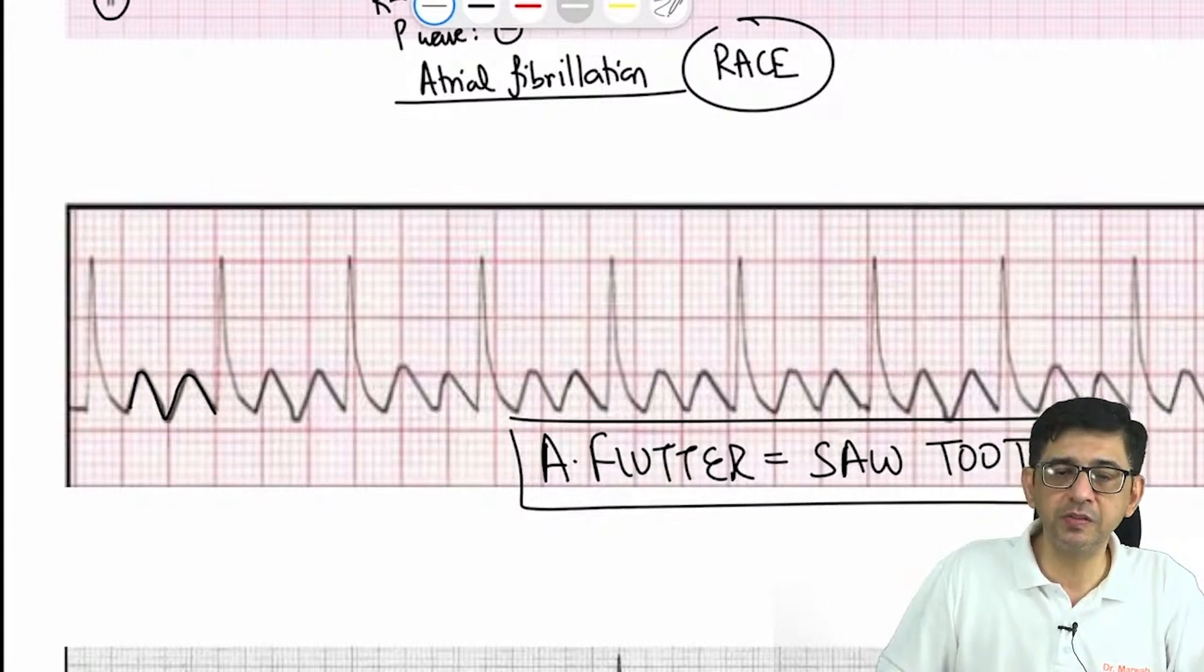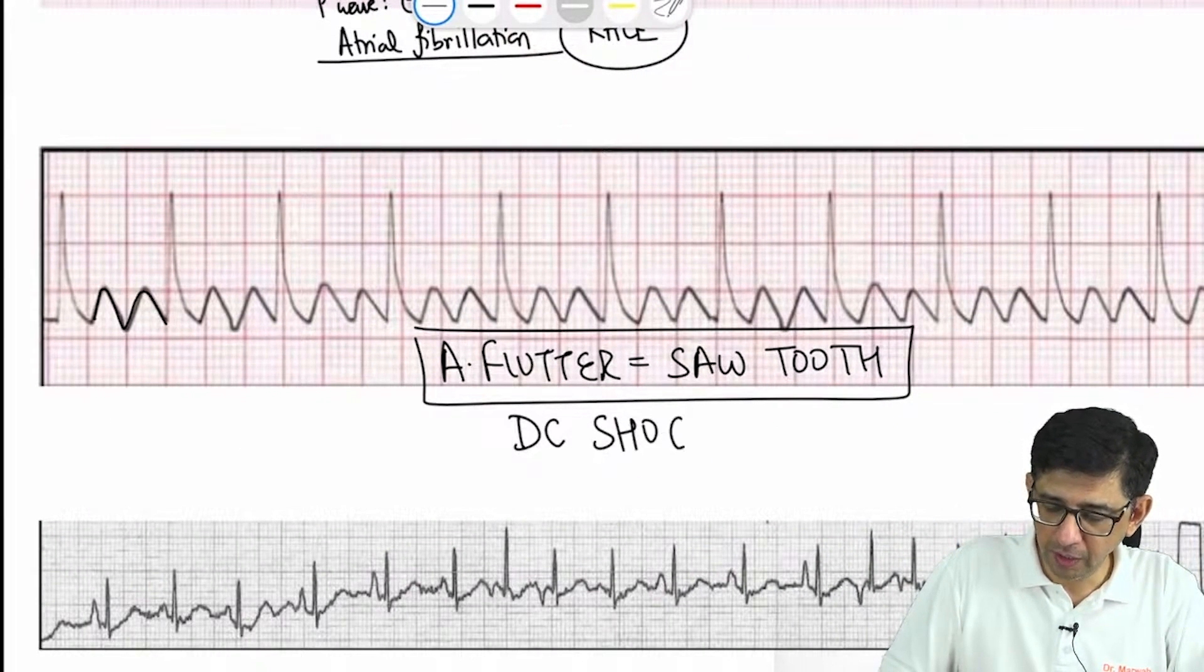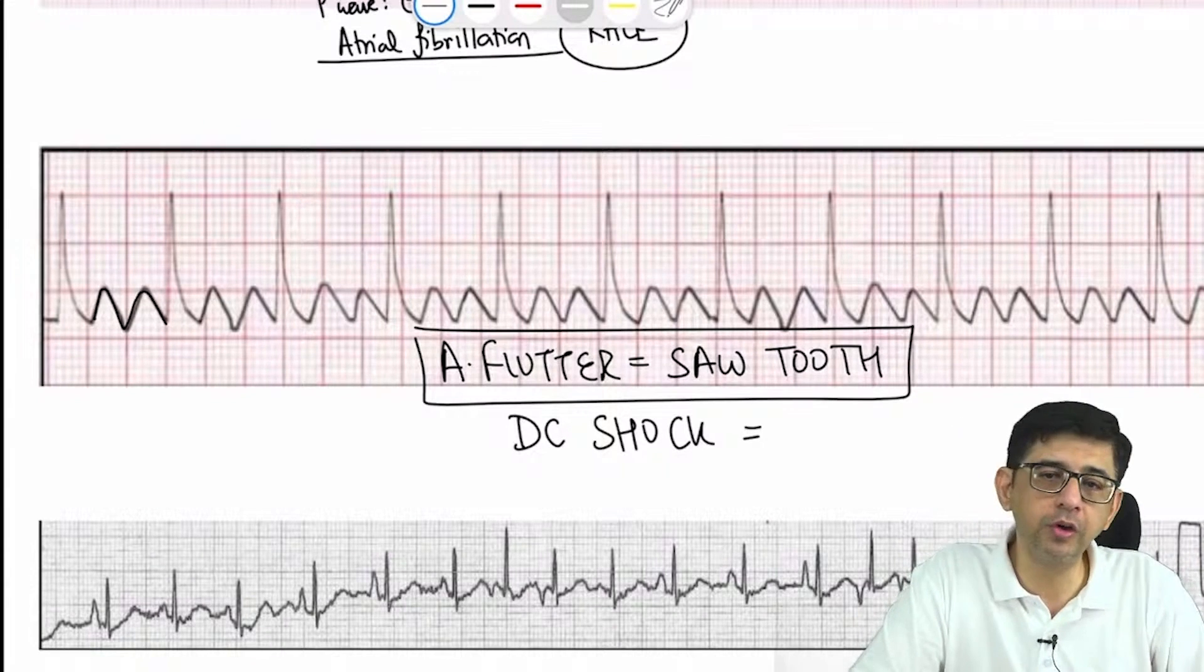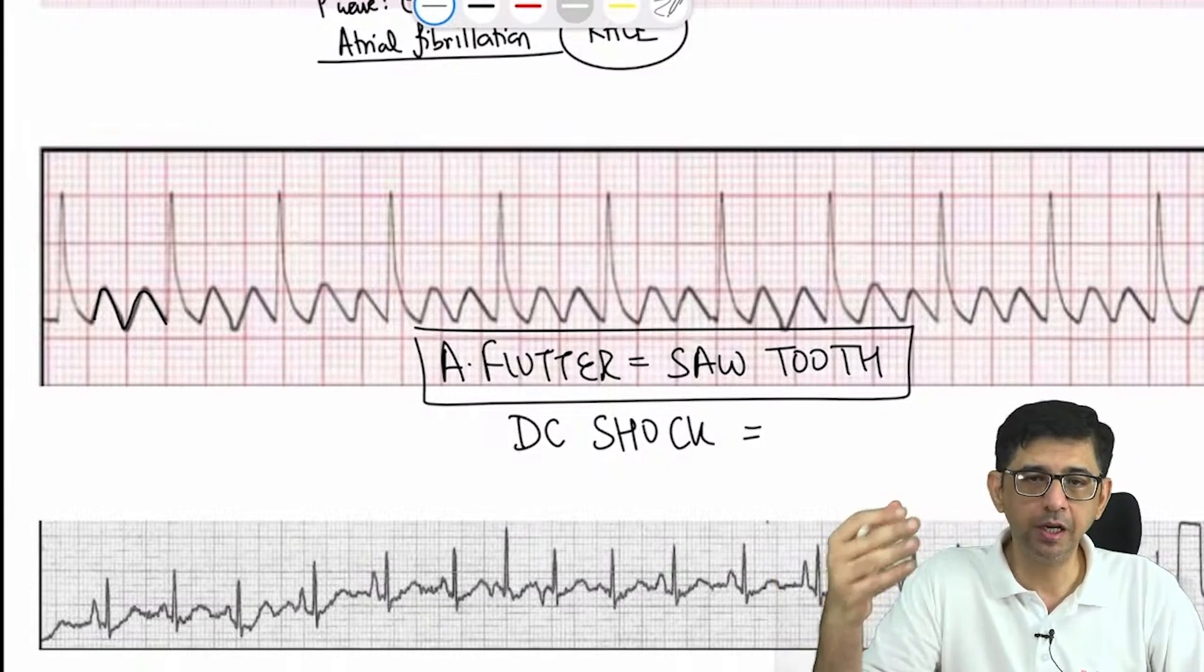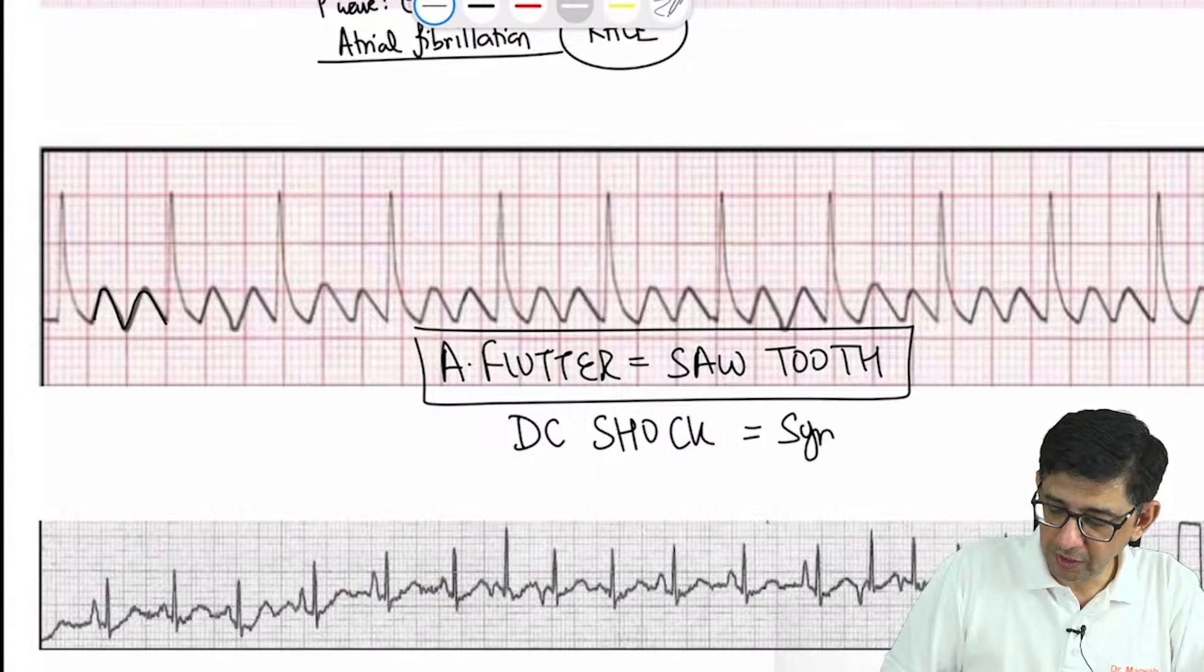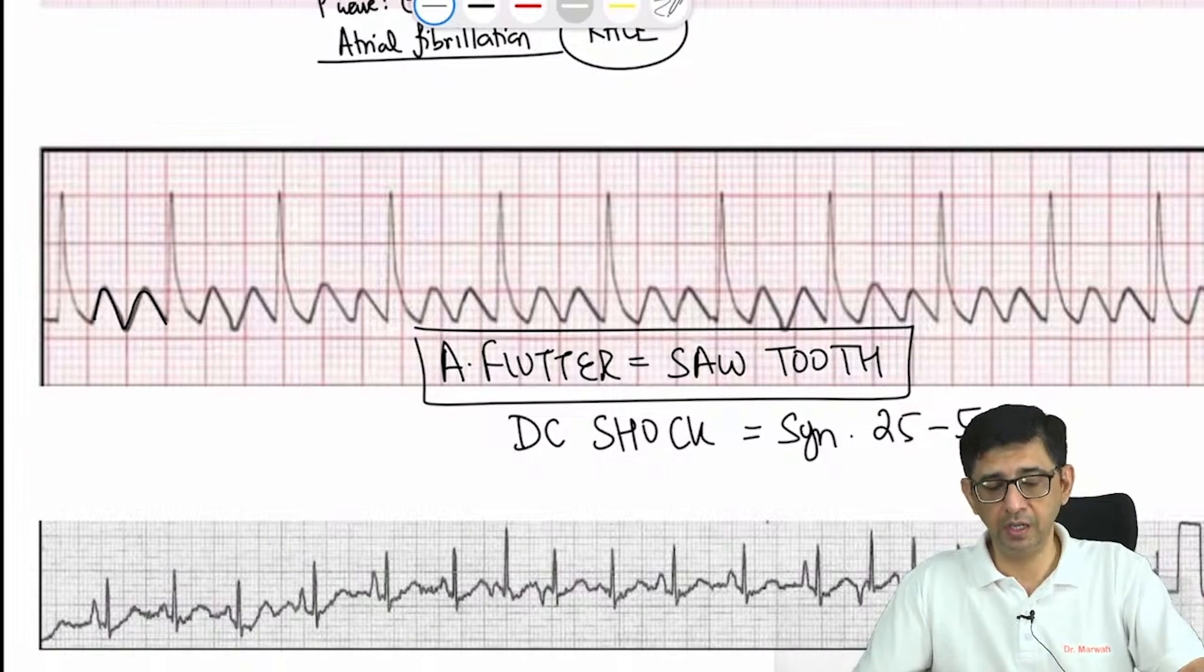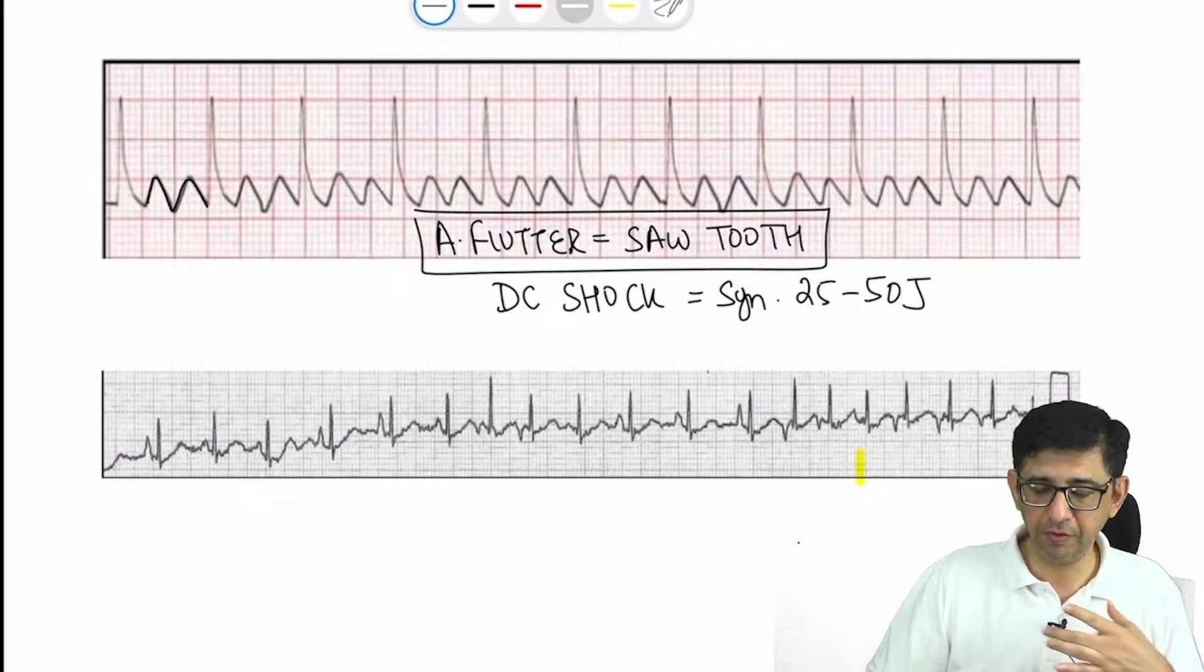What intensity of DC shock would you give for management of atrial flutter? Would you give synchronized or non-synchronized? Write sync or non-sync and mention the intensity. We'll go for synchronized DC shock, and the intensity is 25 to 50 joules. It's a low-intensity DC shock in sync mode.